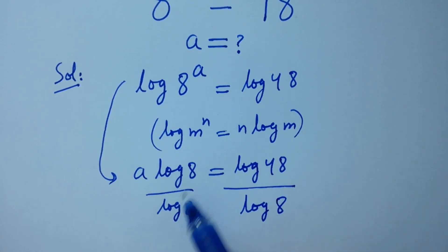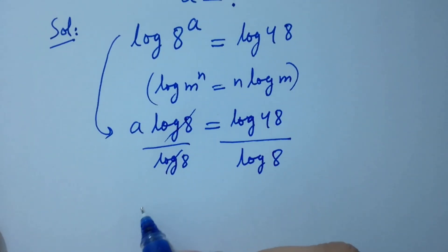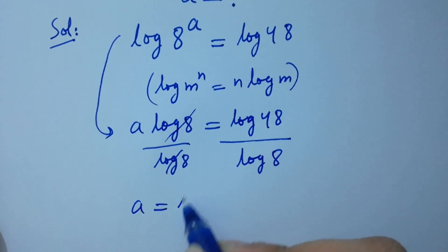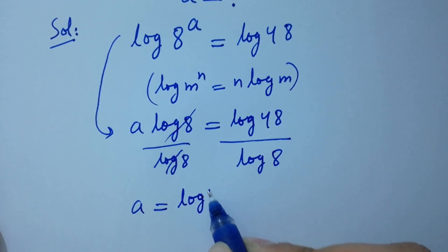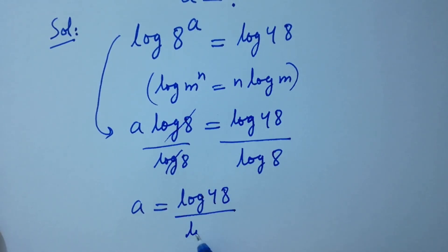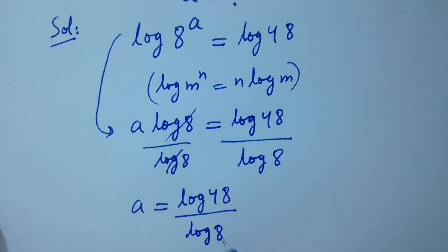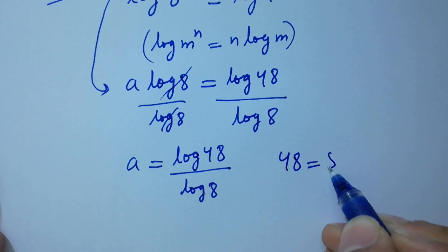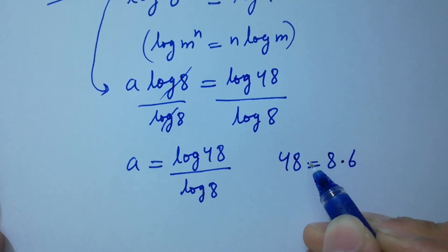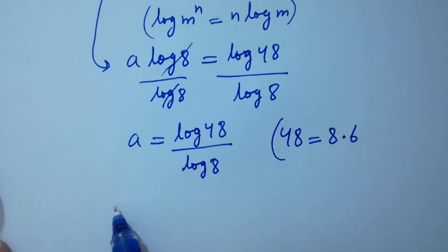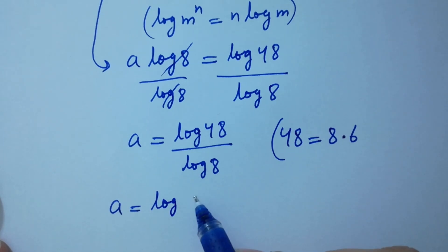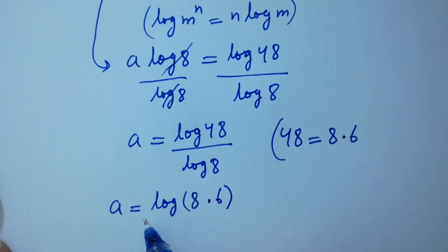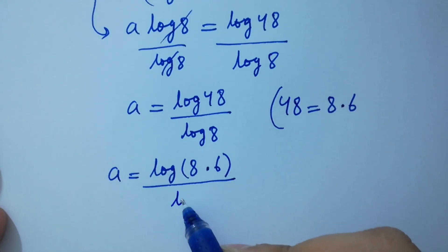Log 8 and log 8 cancel. A equals log 48 over log 8. Since 48 equals 8 times 6, a will be equal to log(8 times 6) over log 8.